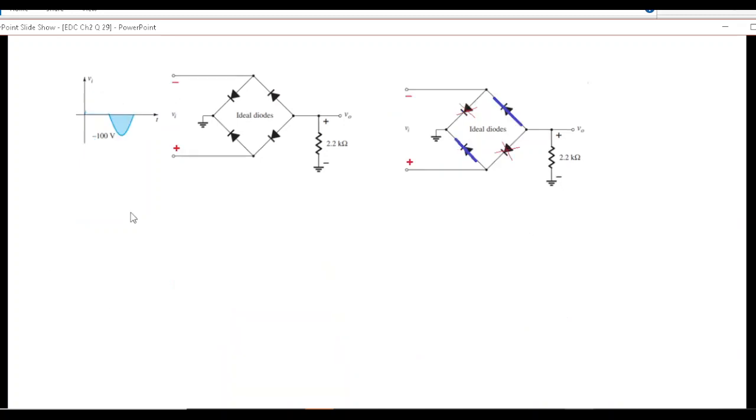Similarly we go to the second one, the negative peak. Here also we'll follow the same technique. Negative touching this negative, so this will be forward. Positive touching this positive of the diode, so this diode will be forward. These two forward, these two reverse.